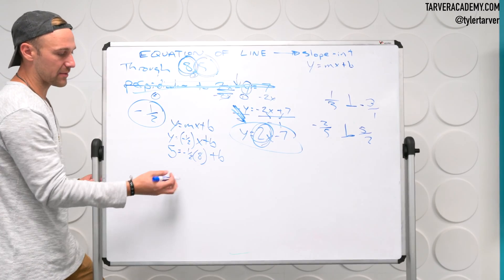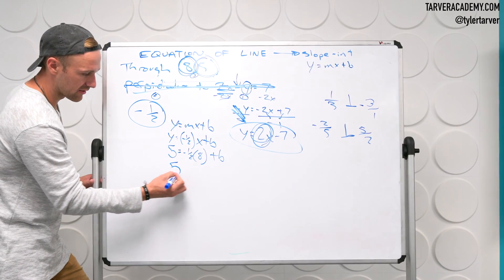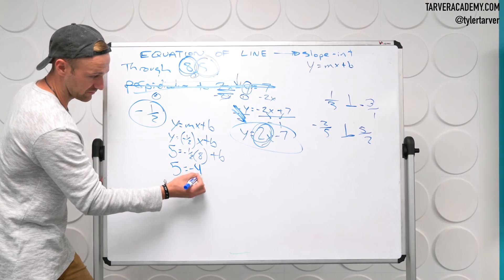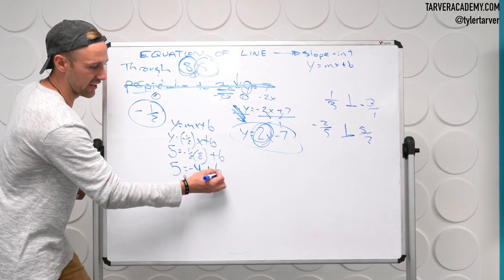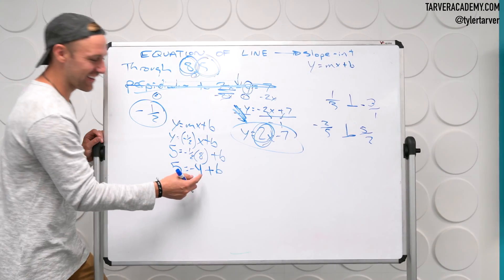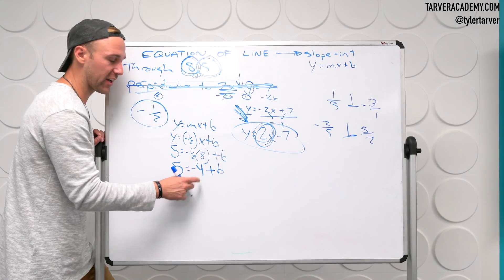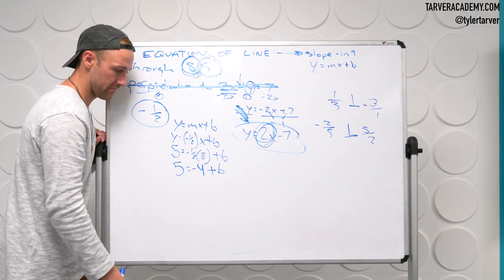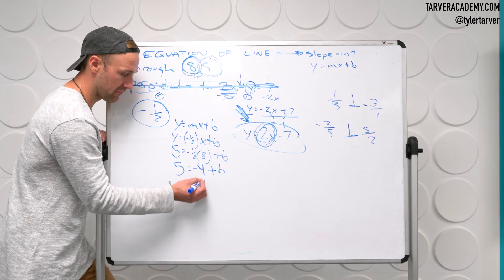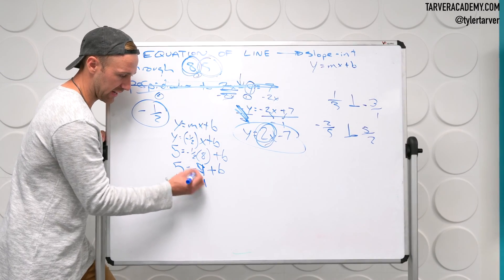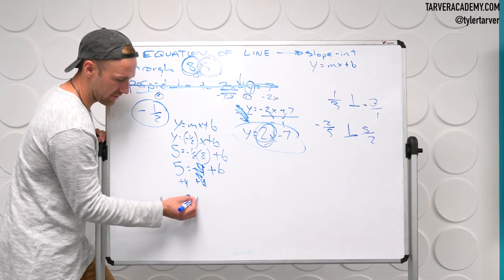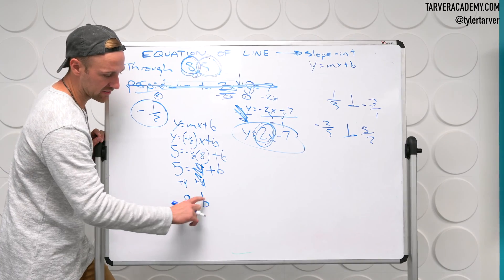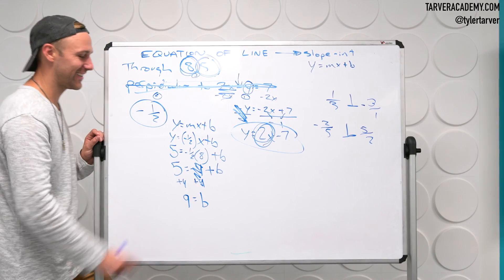Okay, negative 1 half times 8 is 4. Negative 4. Negative 4. You said it, you whispered the negative part. And then, I got to get B by itself, so what I got to do to negative 4? Add it. Add it. That cancels out. So 9 equals B. It looks like you're switching it. That's crazy.